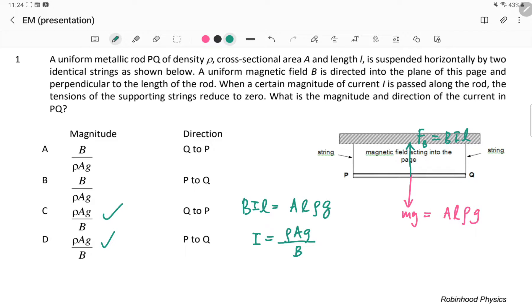For the direction, use Fleming's left hand rule. The index finger points in, the thumb points up, so the middle finger points to the right. The current direction is from P to Q, and the answer would be D.